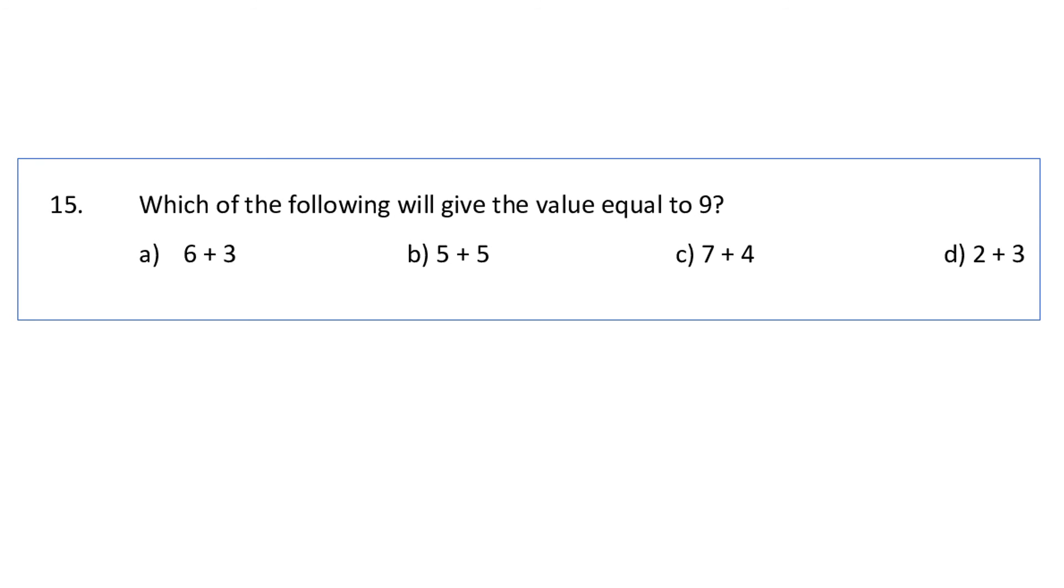Next: which of the following will give value equal to 9? We have to add each option and check which one will give 9. Option A: 6 plus 3 equals 9. 5 plus 5 equals 10, 7 plus 4 equals 11, and 2 plus 3 equals 5. So option A, 9 can be seen in the first option A.